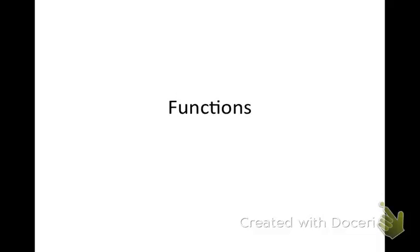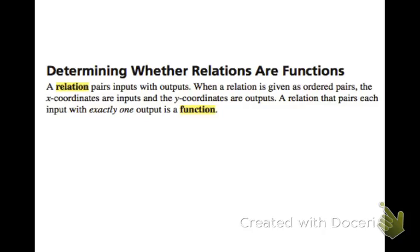This is going to be the first lesson in Chapter 3, and it's going to be about functions. We're going to review some of the things you learned last year. When you determine whether relations are functions, a relation pairs inputs with outputs. When a relation is given as ordered pairs, the x-coordinates are the inputs and the y-coordinates are the outputs. A relation that pairs each input with exactly one output is a function.